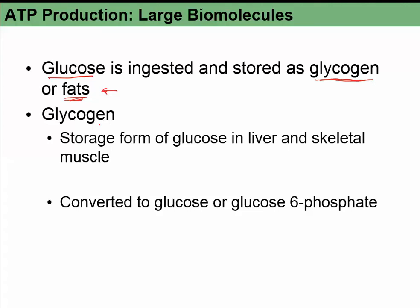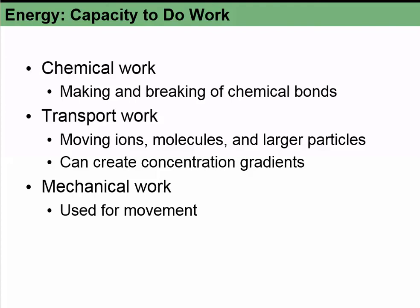Glycogen is the storage form of glucose, usually found in the liver and in skeletal muscle, because skeletal muscle is where you might urgently need energy. This glycogen can then be reconverted into glucose or something called glucose-6-phosphate, which is just part of the process of glycolysis.